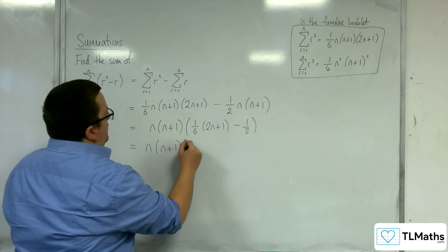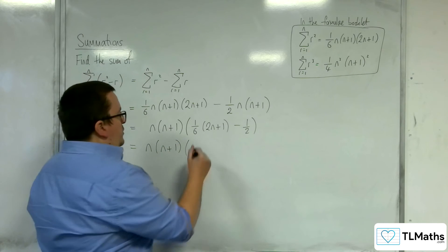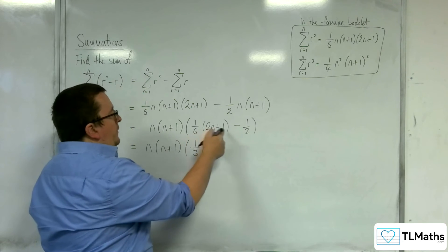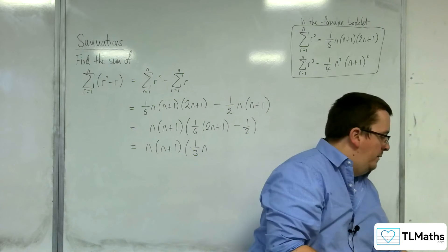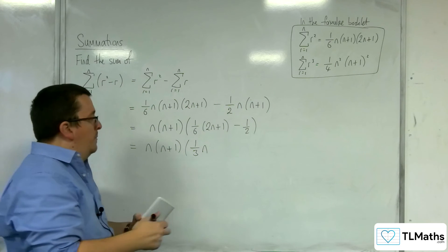n, n plus 1 times, so we've got 2n times 1 sixth, which is 1 third n. Then we've got 1 sixth, and then we've got take away 1 half. So 1 sixth take away 1 half is minus 1 third.